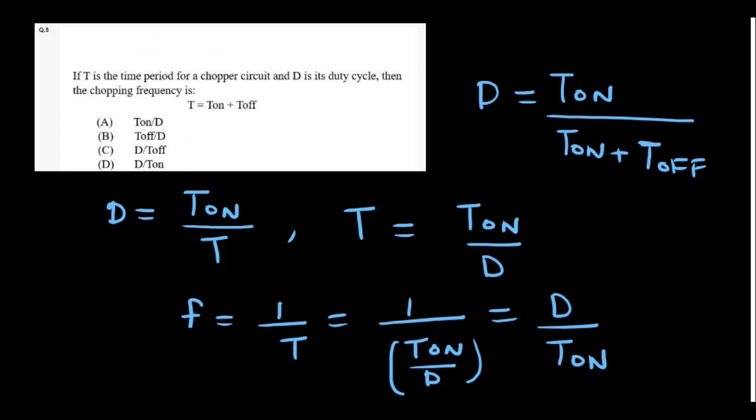Here the time period is given, we have to find the chopping frequency. Duty cycle is given by T_on upon T_on plus T_off, that is T. So duty cycle equals T_on upon T. Then T equals T_on upon D. Once you know the time period, frequency is one upon T, so one upon T_on upon D. D goes to the numerator and T_on to denominator, so D upon T_on. Option D is the correct answer.